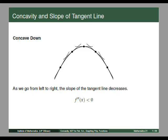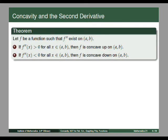We summarize these observations in the following theorem. Let f be a function such that f double prime exists on (a, b). If f double prime of x is greater than 0, then f is concave up on that interval. If f double prime of x is negative, then f is concave down on (a, b). The strength of this theorem is it allows us to determine algebraically if a function is concave up or concave down on an interval by computing only the second derivative of that function.